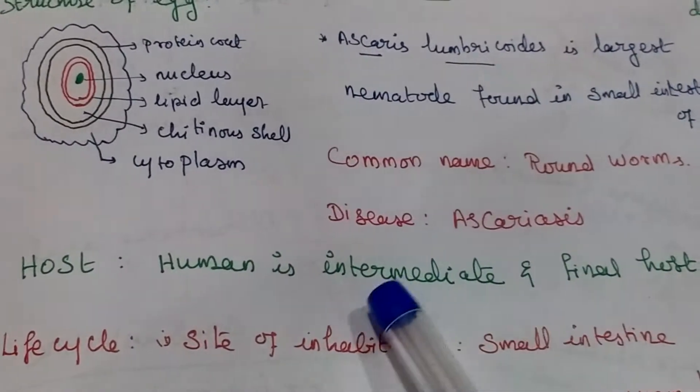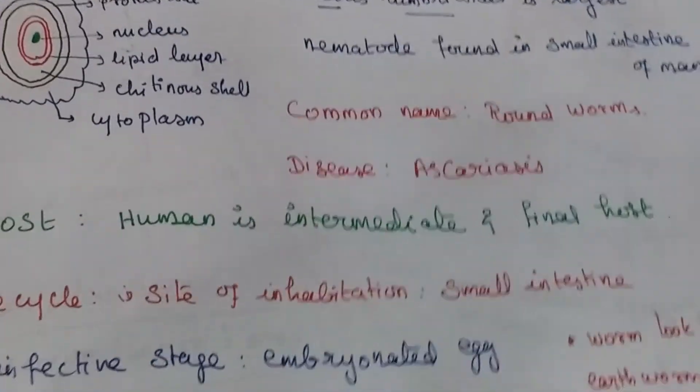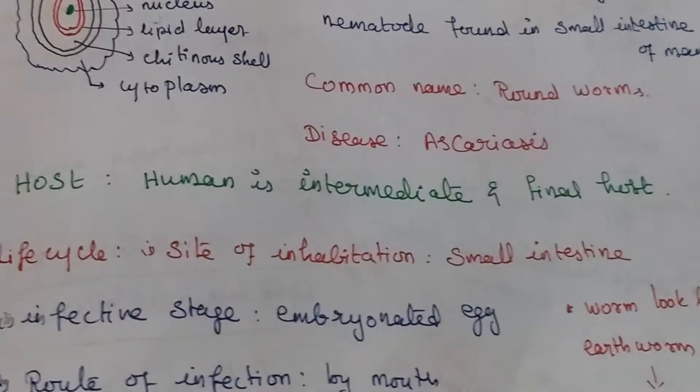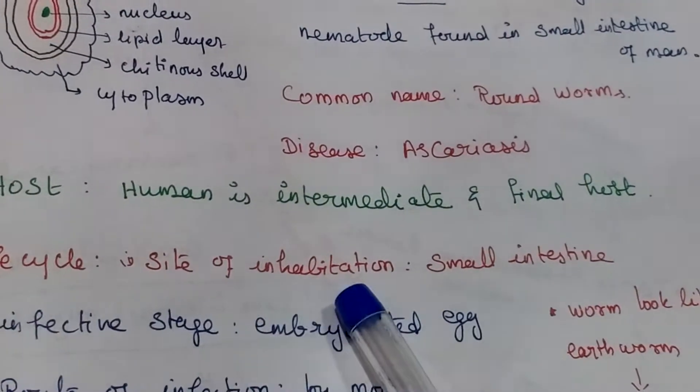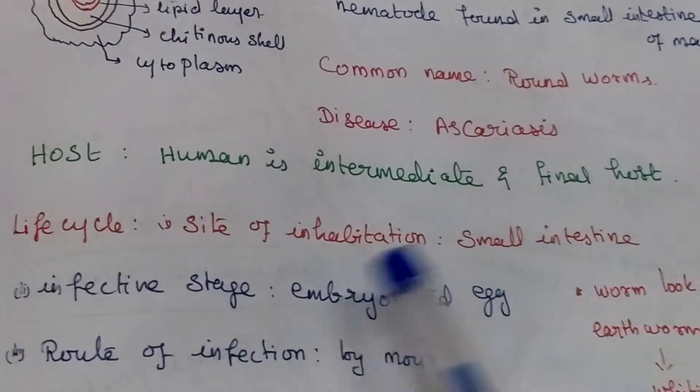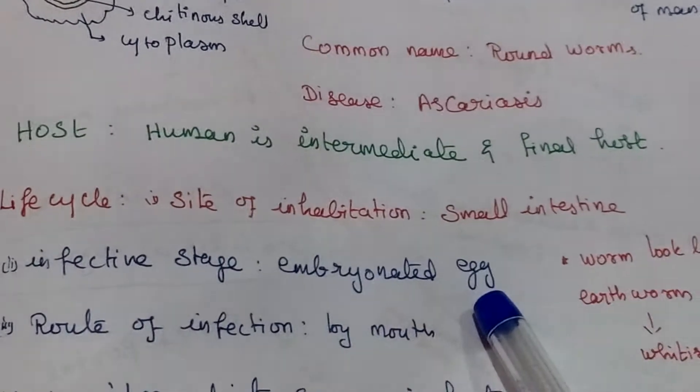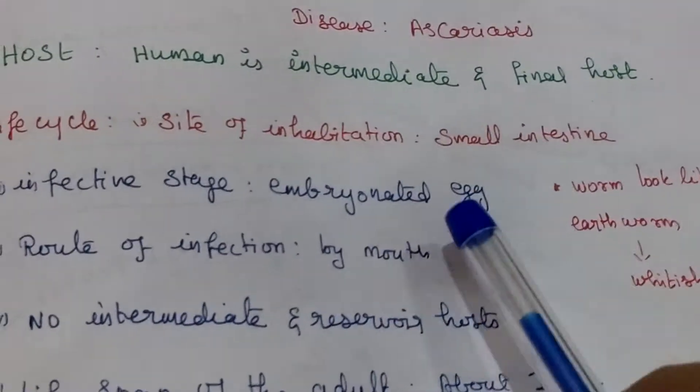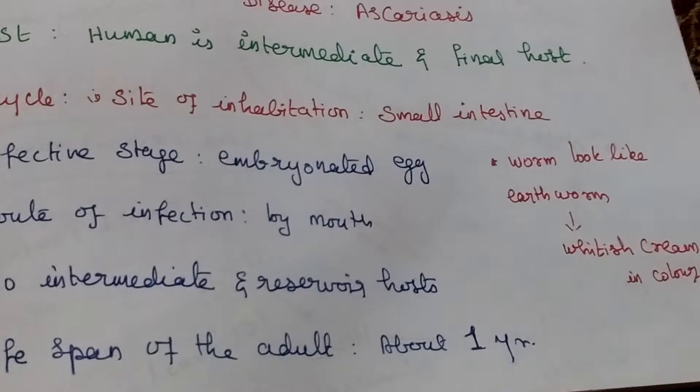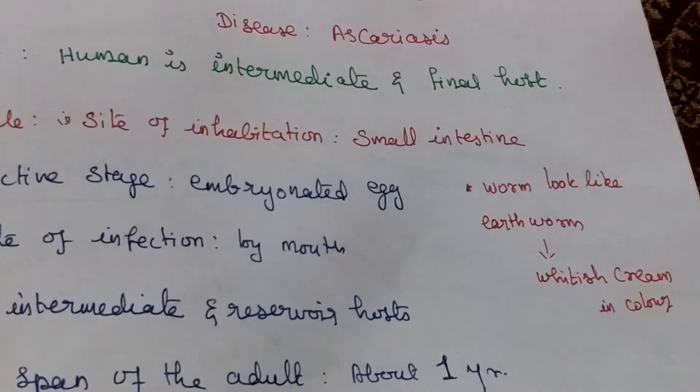Host is human. No intermediate and final host. Lifecycle: site of inhabitation is small intestine, infective stage is embryonated egg. Route of infection by mouth, no intermediate and reserve host, lifetime one year. This worm looks like earthworm but white or creamy in color.